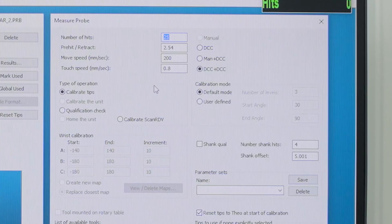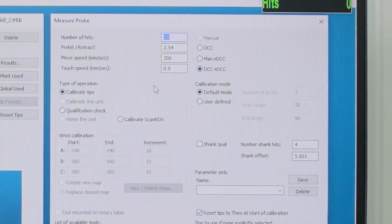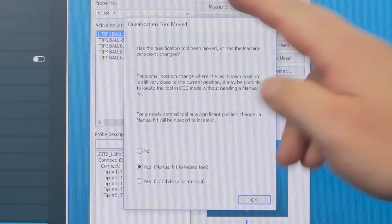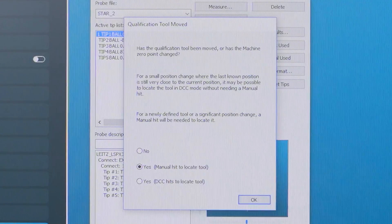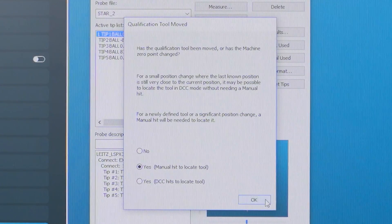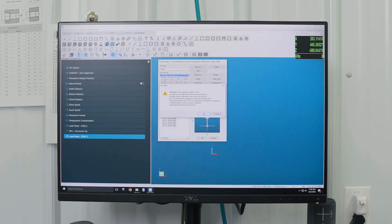Click measure. We'll be on DCC mode. We're going to click measure. This asks if our qualifying sphere has been moved. Yes, it has moved, and I'm going to do a manual hit today. Now we're going to go to the CMM and we'll tell it where that sphere is at.